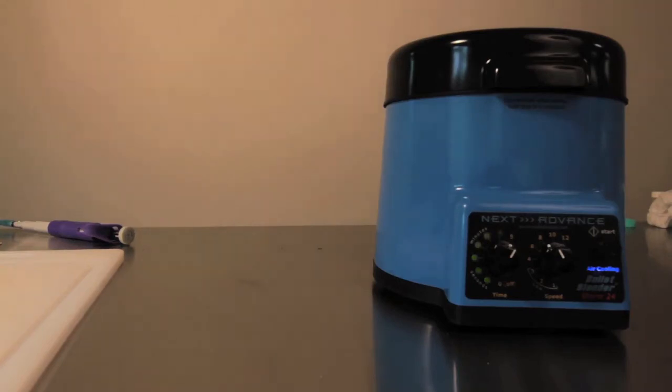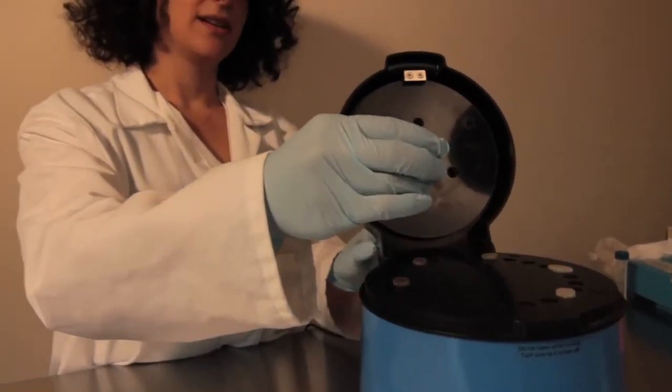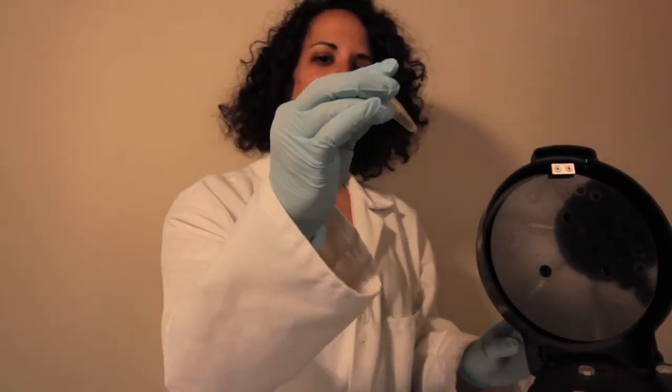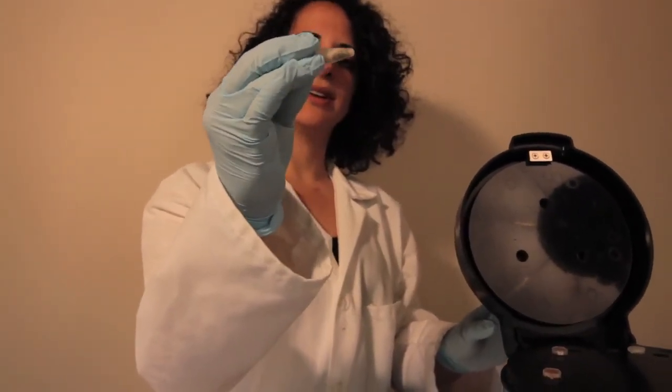Examine your samples. If you see unhomogenized pieces, place them back in the bullet blender and homogenize for another minute or two at speed 10.